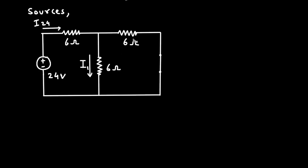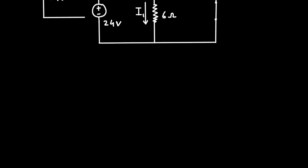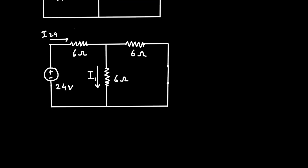Here we can see this 6 ohm and this 6 ohm are connected in parallel. So 6 ohm parallel with 6 ohm is equal to 6 × 6 divided by 6 + 6. If we solve this, we get 3 ohm. So we can replace these two resistors by simply 3 ohm.